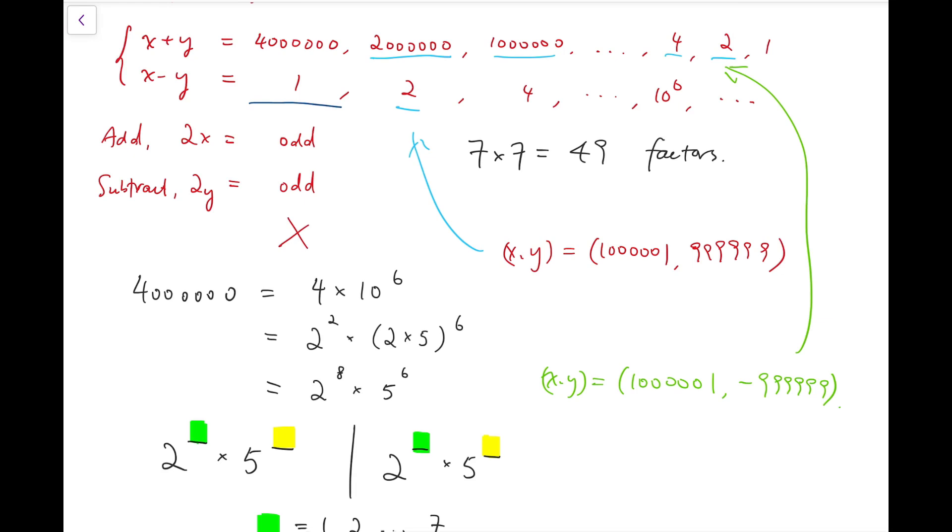So actually, for these 49 cases, we have already found some possibilities with x to be positive and y to be negative.